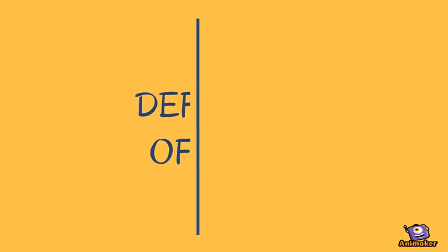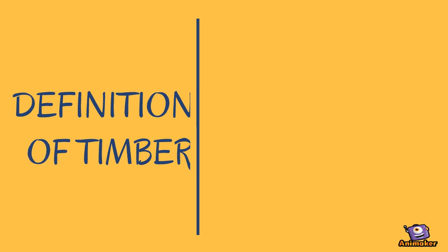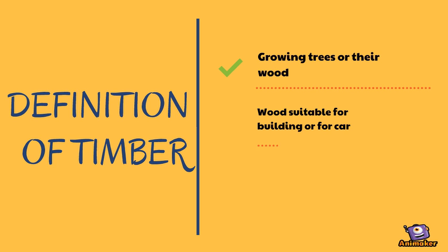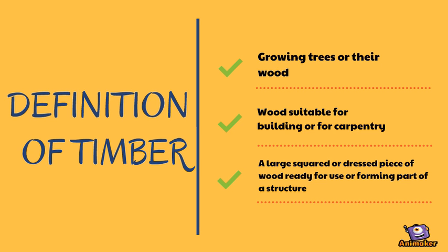Did you know what is timber? Here is the definition of timber. Timbers are products from trees or wooded land considered as a source of wood. Timbers are suitable for building or for carpentry. Moreover, timber is a large square or dressed piece of wood ready for use or forming part of a structure.